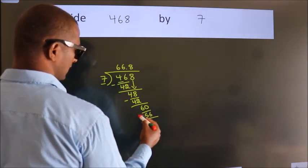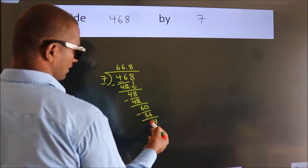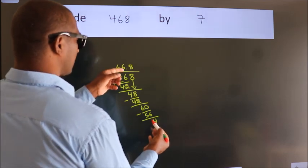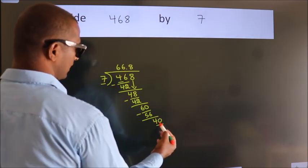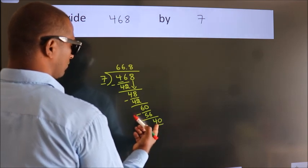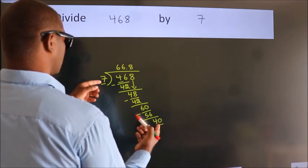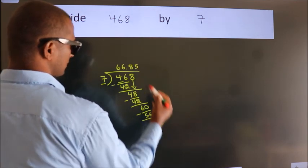Now we subtract. We get 4. After this, we already have the decimal. So directly take 0. So, 40. A number close to 40 in the 7 table is 7 times 5, 35.